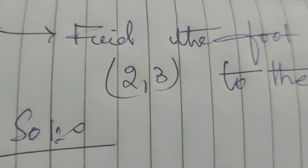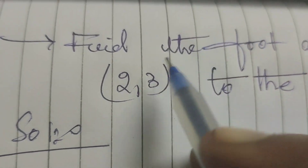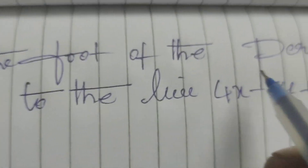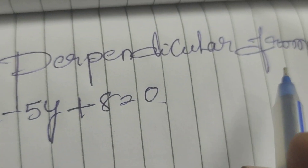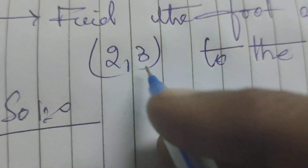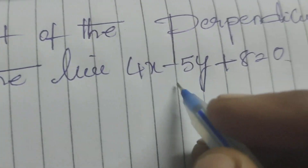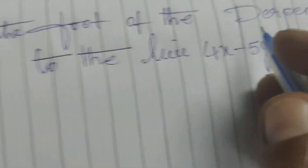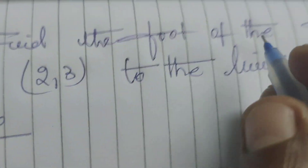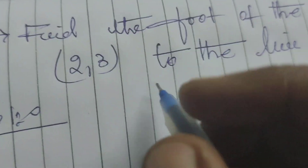This is Dr. A.T. Today we are going to explain this problem: find the foot of the perpendicular from the point (2, 3) to the line 4x minus 5y plus 8 equals to 0. We need to find the foot of the perpendicular distance from the given point to the line.